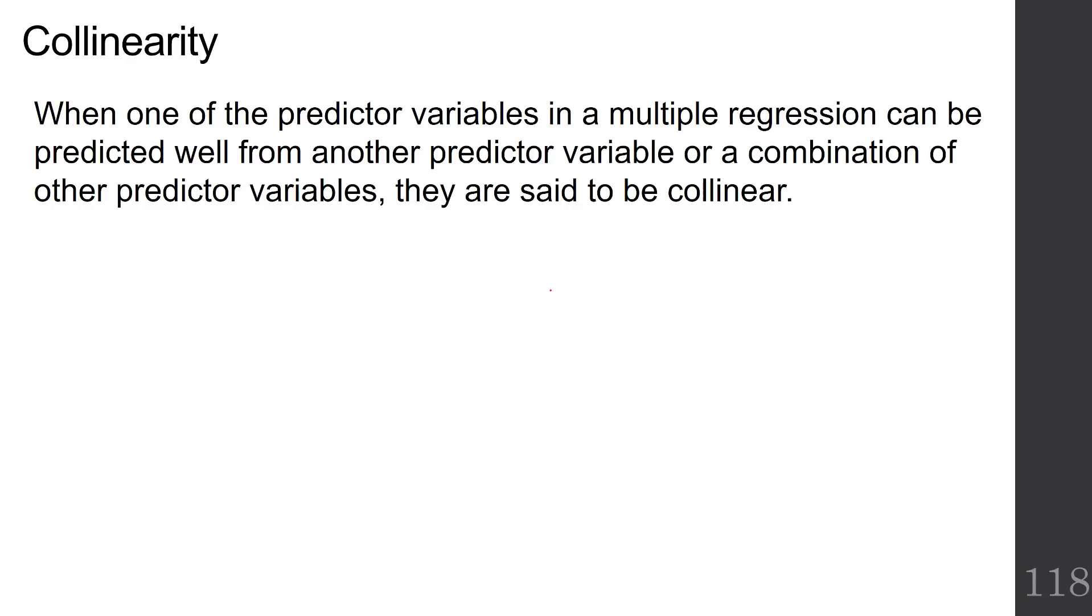When one of the predictor variables in a multiple regression can be predicted well from another predictor variable or a combination of other predictor variables, they are said to be collinear. We refer to this issue as collinearity, or sometimes people call it multicollinearity.